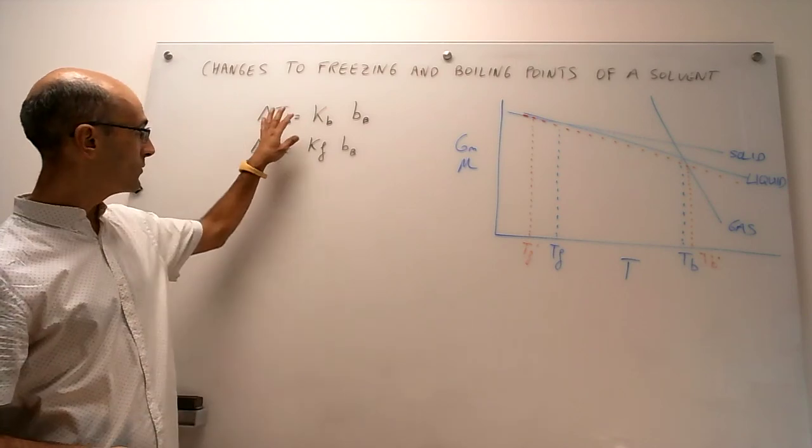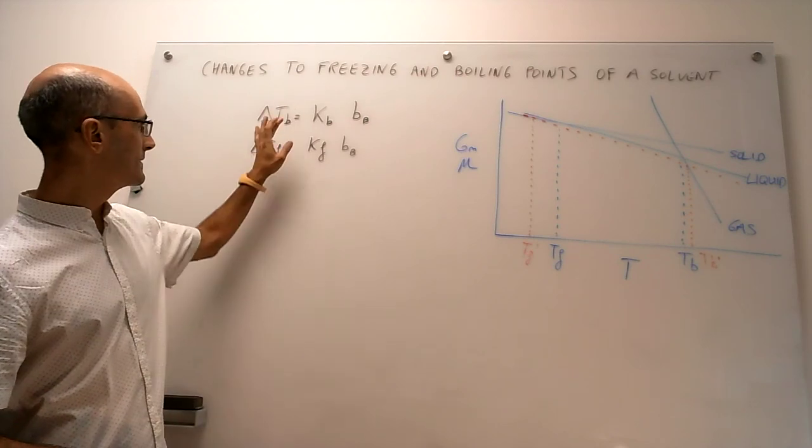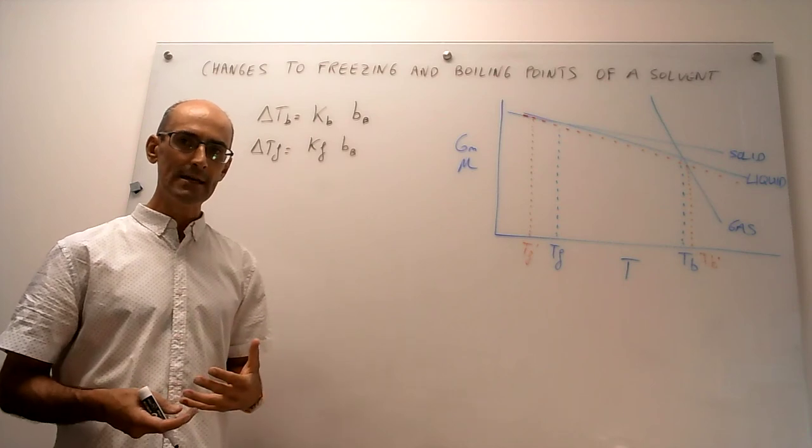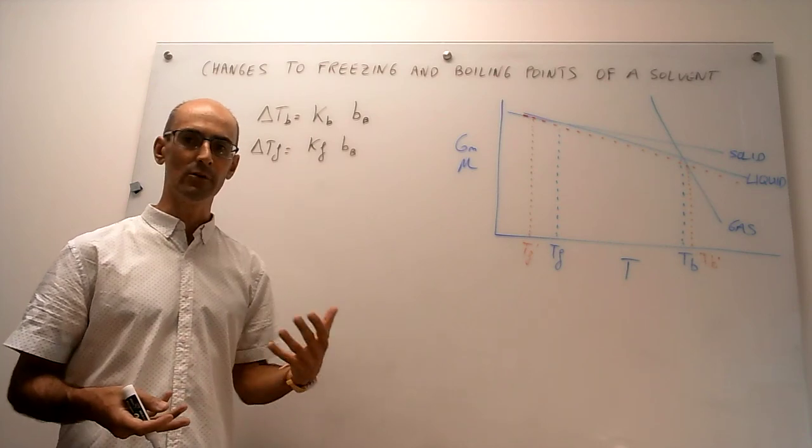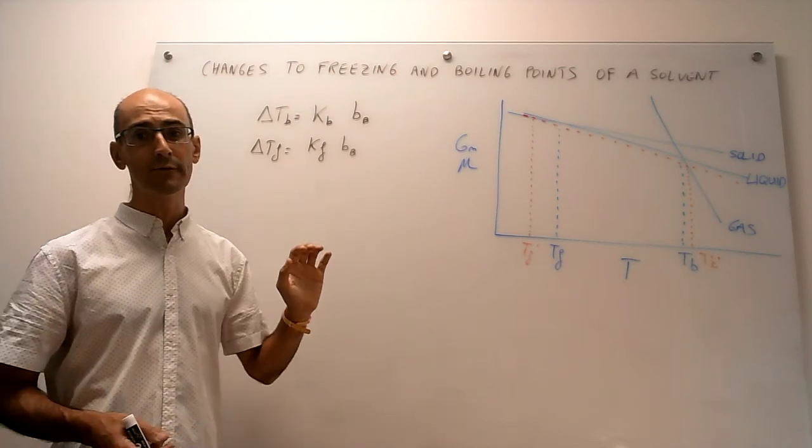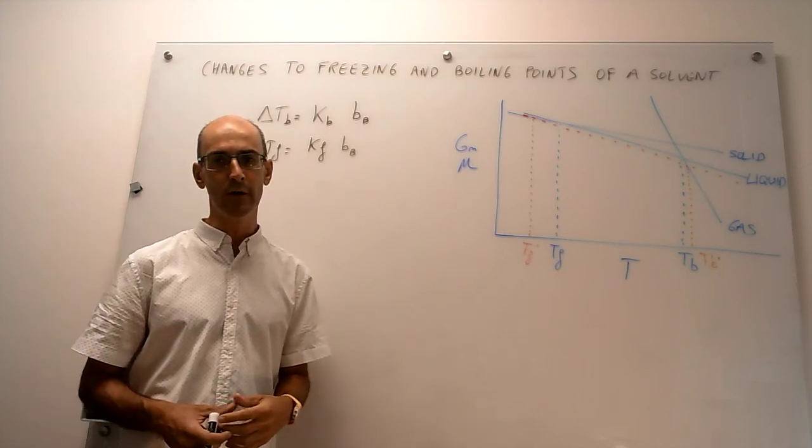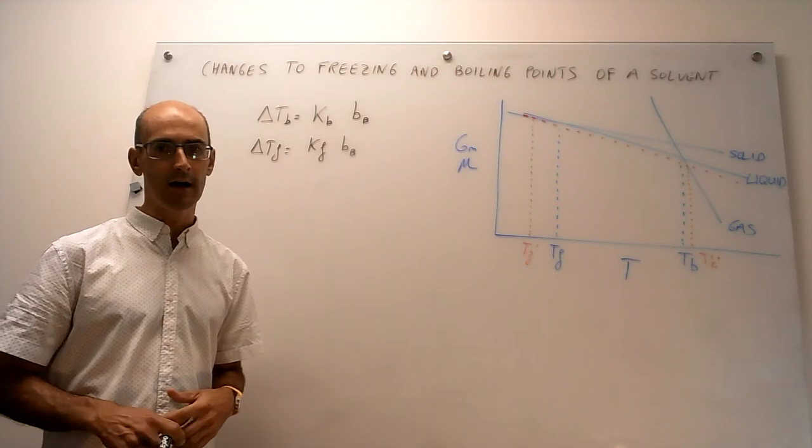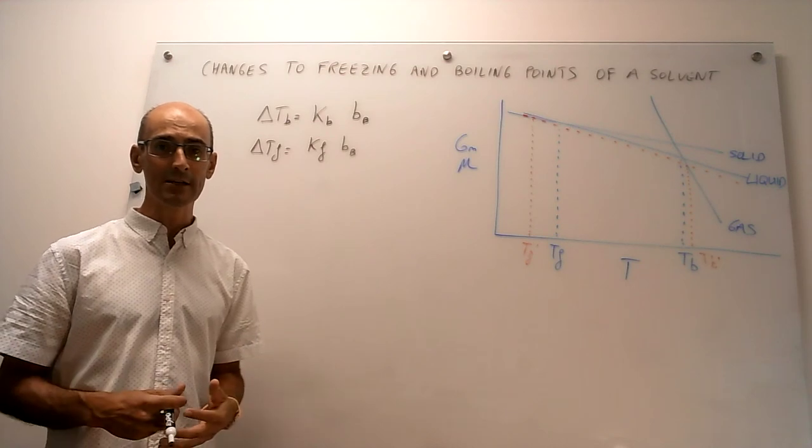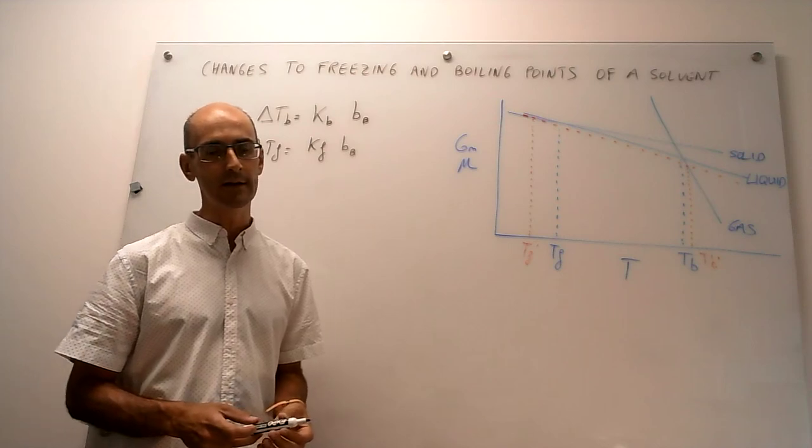Now there are ways to actually derive this expression that we're not going to cover in this course, but these are constants that depend on properties of the solvent like the molar mass and the enthalpy of the phase transition involved, so freezing or vaporization. And they're different for each solvent, so they will change from water to benzene and so forth. Okay, so from here on there's tables that actually provide what the values of the cryoscopic constant and the ebullioscopic constant are.